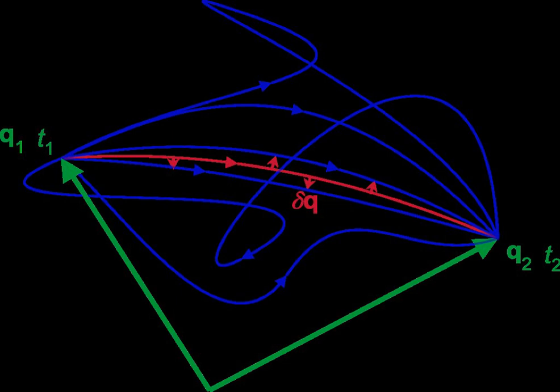In words this reads, the path taken by the system between times t1 and t2 and configurations q1 and q2 is the one for which the action is stationary to first order. In applications the statement and definition of action are taken together: delta of the integral from t1 to t2 of L dt equals zero.